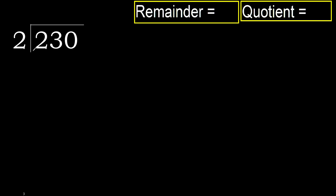230 divided by 2. 2 is not less, therefore start with 2 here. 2 multiplied by which number is nearest to 2 but not greater? 2 multiplied by 2 is 4 — 4 is greater. 2 multiplied by 1 is 2, which is not greater.